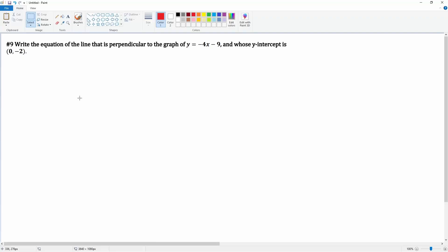Section 3, number 9. You're going to write an equation of a line that is actually perpendicular to y equals negative 4x minus 9